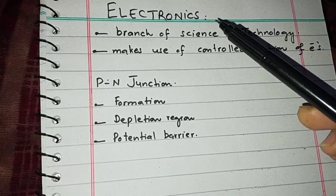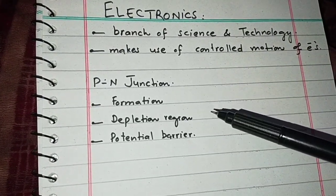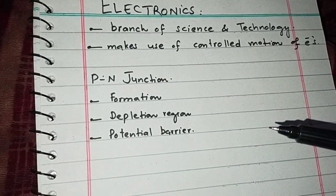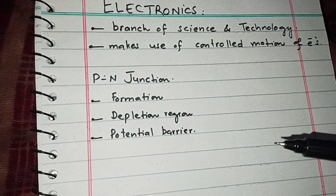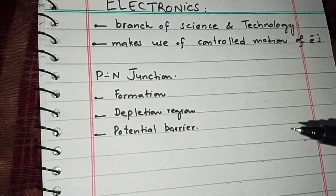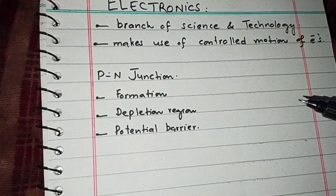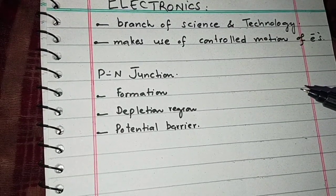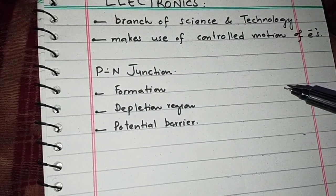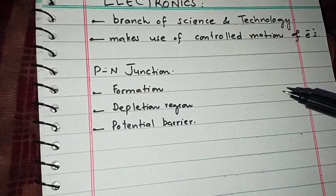The next topic that comes under the heading of electronics is the P-N junction. Last time we studied about intrinsic materials and then we made extrinsic by the process of doping. We made extrinsic materials into P-type and N-type materials. P-type materials are formed by doping the semiconductor material with a trivalent impurity, and N-type materials are made by doping with a pentavalent impurity.